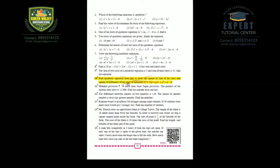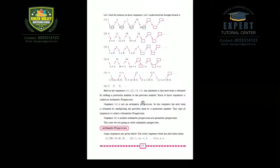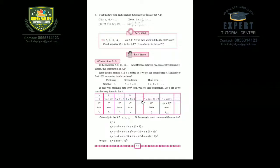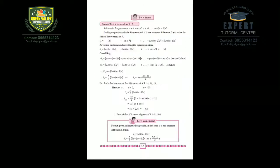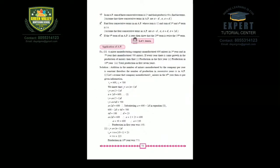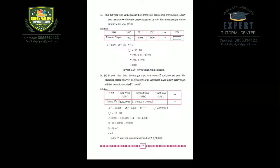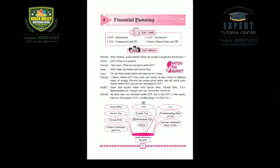On page number 54, question number 10 is not coming in this year's exam. Now we come to Chapter Number 3, which is AP — Arithmetic Progression. You need to complete AP fully. In AP, nothing is deleted from the Maharashtra Board syllabus, so all pages — 66, 68, 61, 72, 76, 77, 78, 79, 80 — are fully retained.